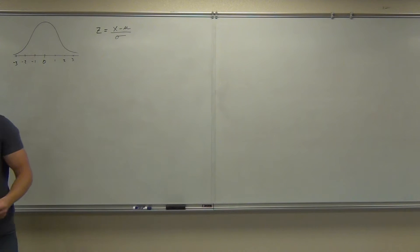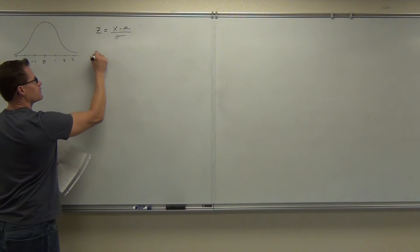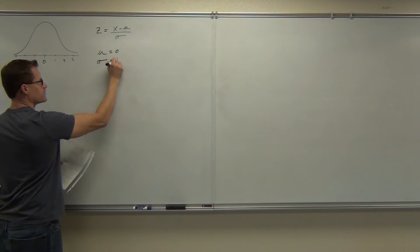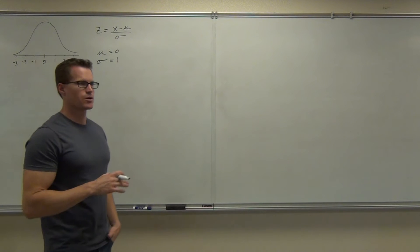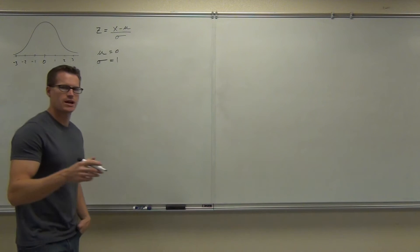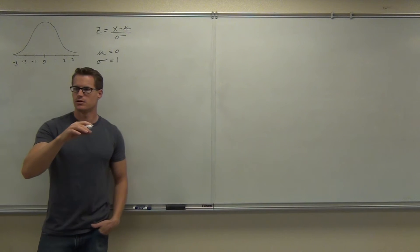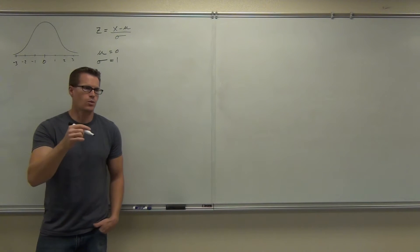Now there's a few things we need to know about this. Firstly, of course, our mean is zero. Standard deviation is always one. But what's kind of nice is that someone has already done the work for us. By the way, what's the area under this curve again? One. Yeah, you get one.